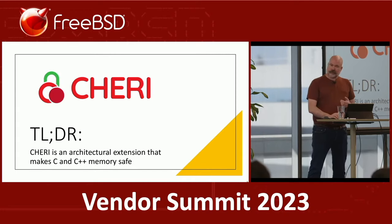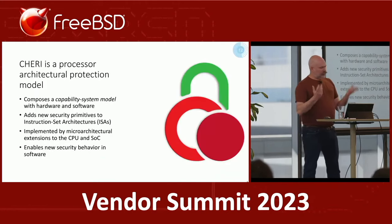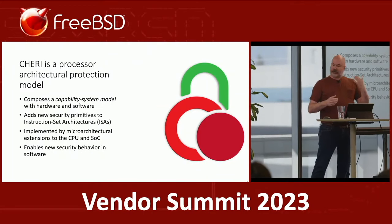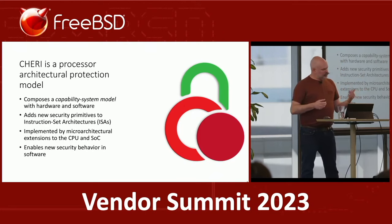With some operating system work, CHERI also provides heap temporal safety. CHERI is a processor architecture protection model using a capability system. Capabilities have a long history and some successful adoption in FreeBSD — file descriptors as capabilities for system resources in Capsicum, for example. CHERI capabilities are memory capabilities; they provide access to memory. CHERI adds a new set of ISA primitives implemented in the microarchitecture of CPUs and SoCs.